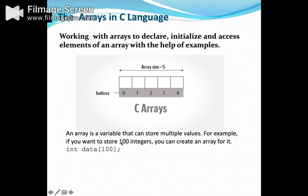An array is a variable that can store multiple values. For example, if you want to store 100 integers, you can create an array as 'int data[100]'. When we write 100 here, an array named 'data' will be created whose indices start from data[0] to data[99], which is the last block of the array.